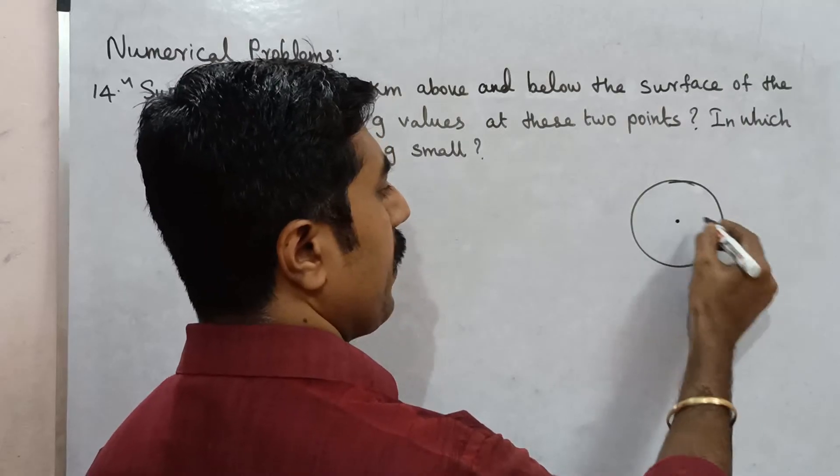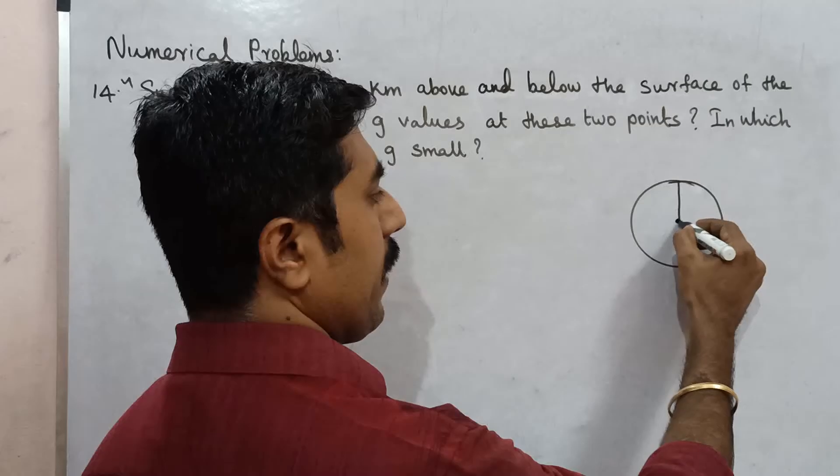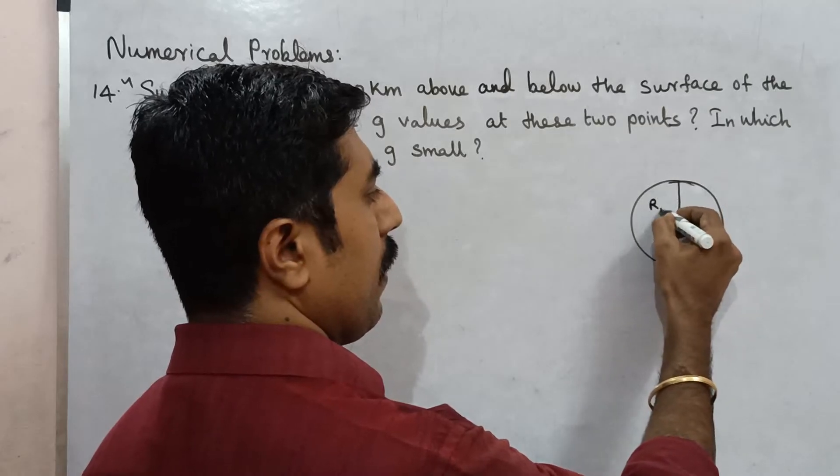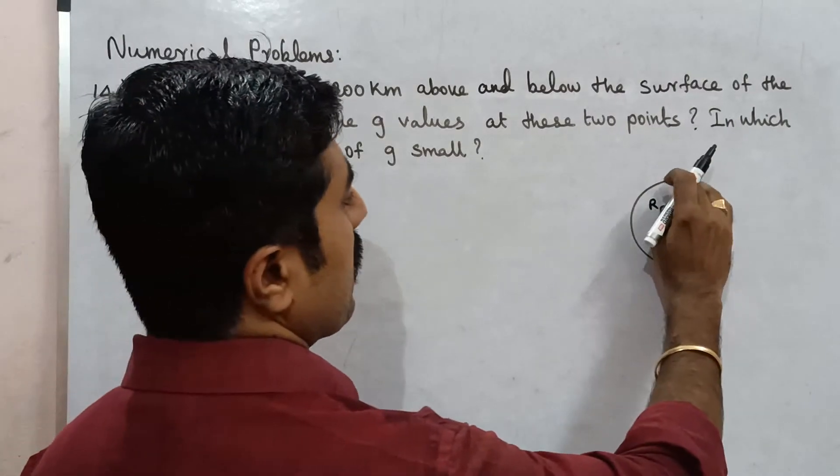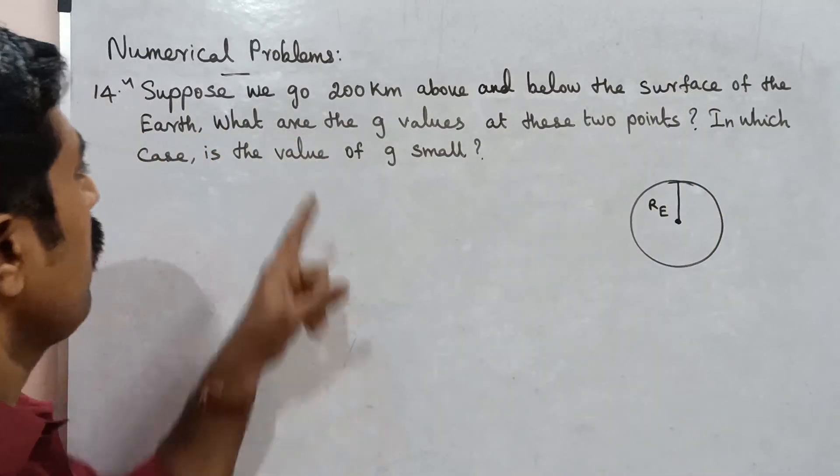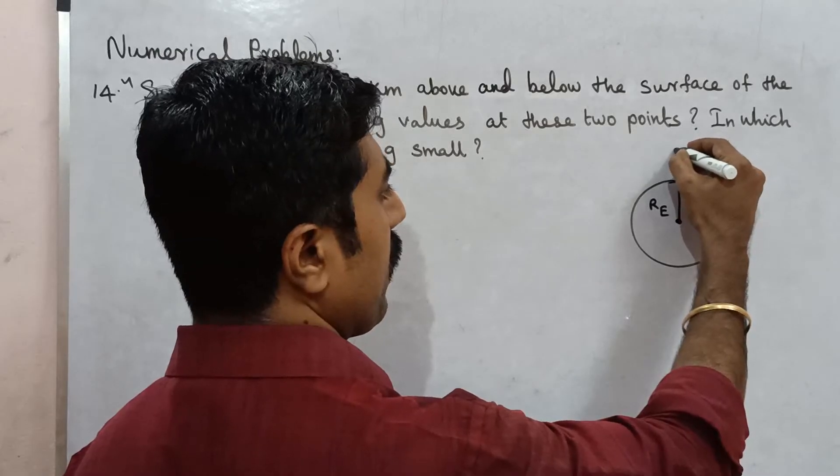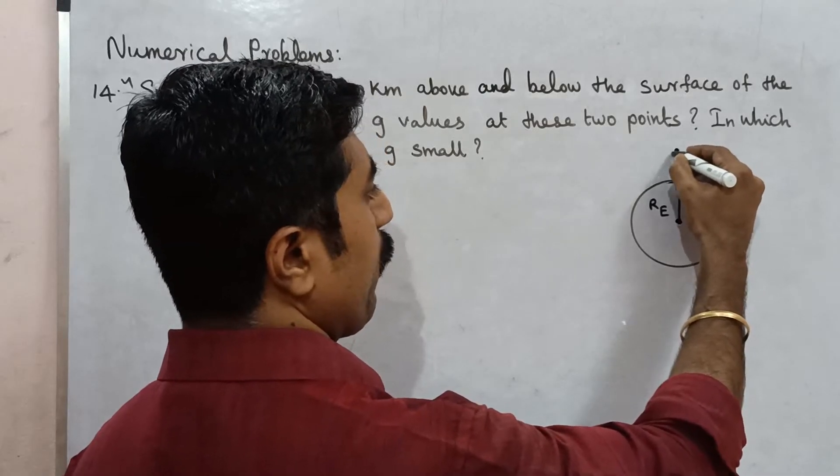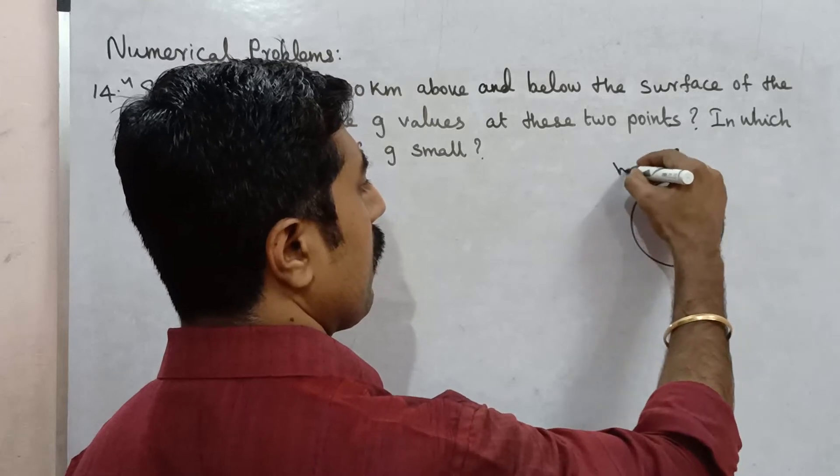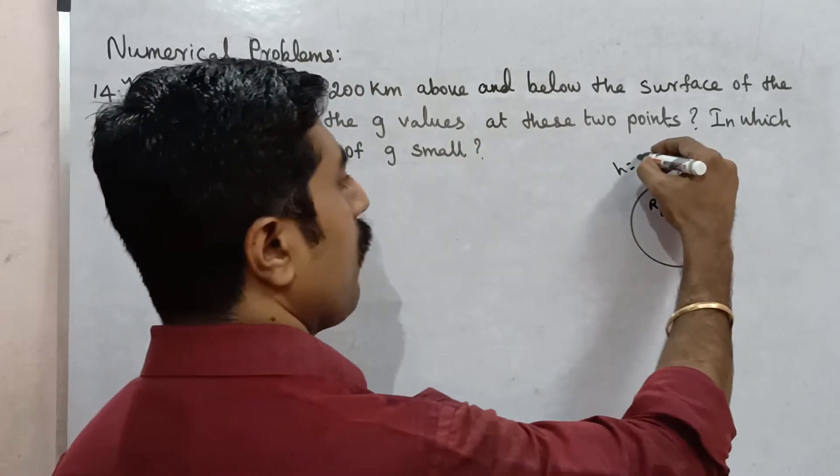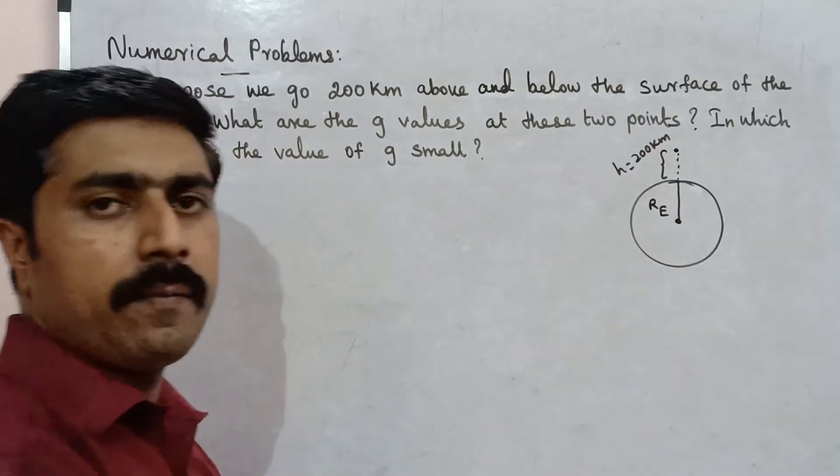So first one, we write. What is this? This is the radius of the earth, Re. So on the surface, above the surface, we go 200 km up. So in that case, at height h is equal to 200 km.